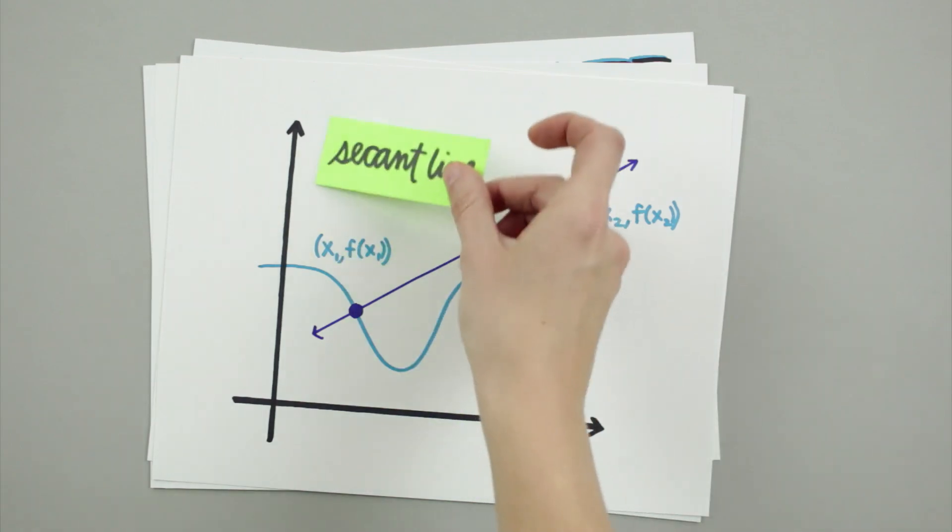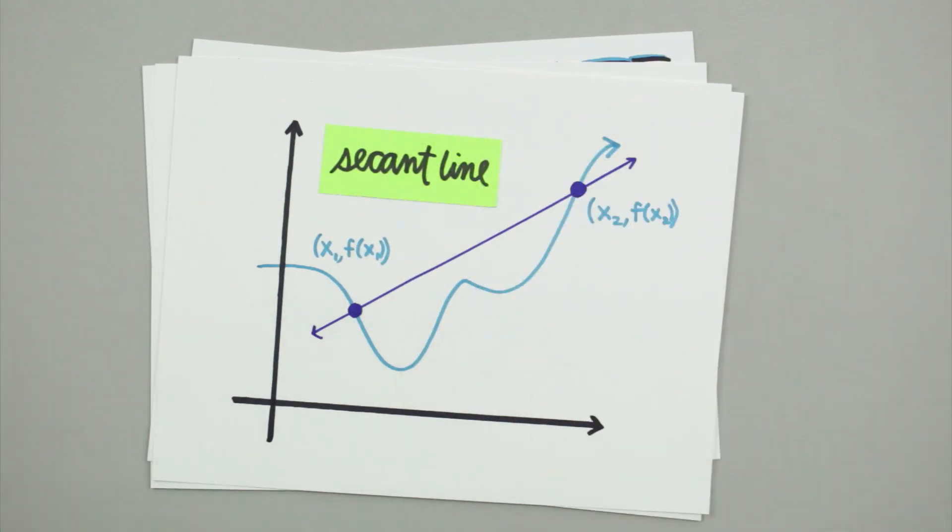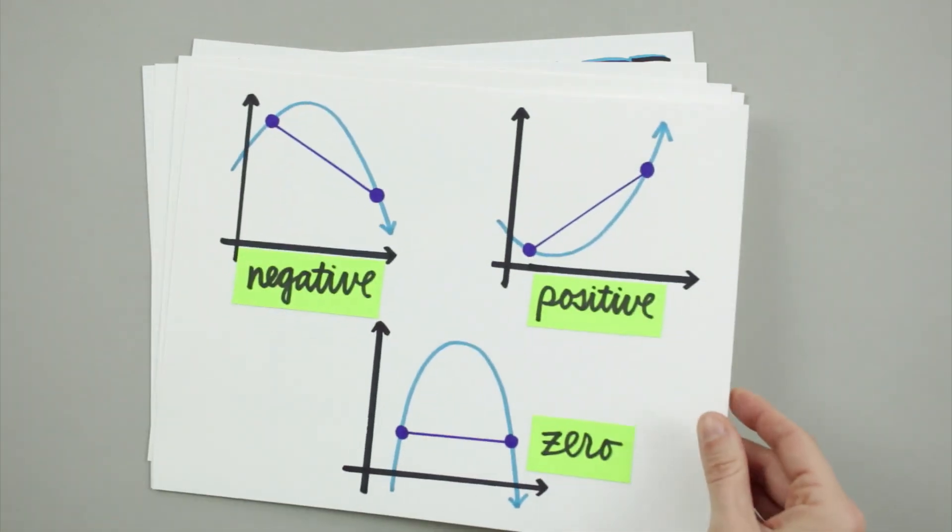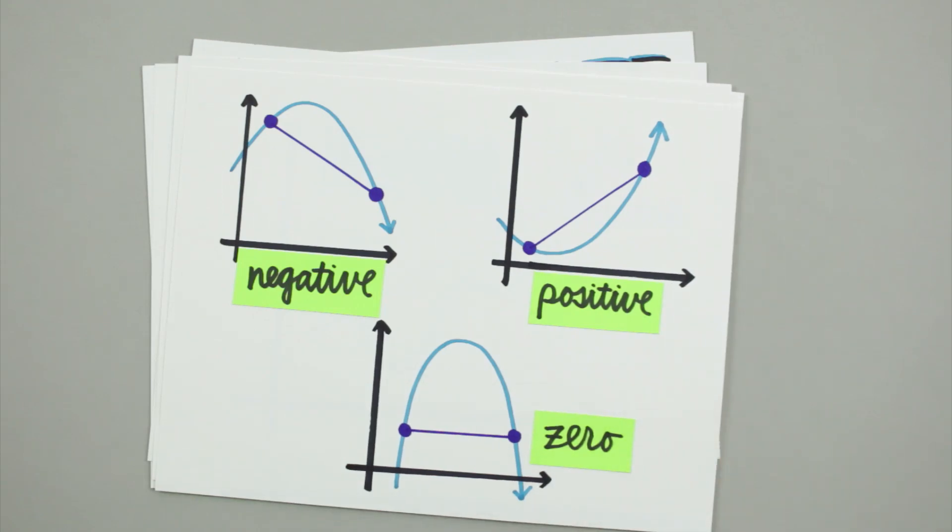A secant line is simply a straight line connecting two points on a function, which is exactly what the average rate of change calculates. The average rate of change of a function can be negative, positive, or even zero, just like the slope of the secant line.